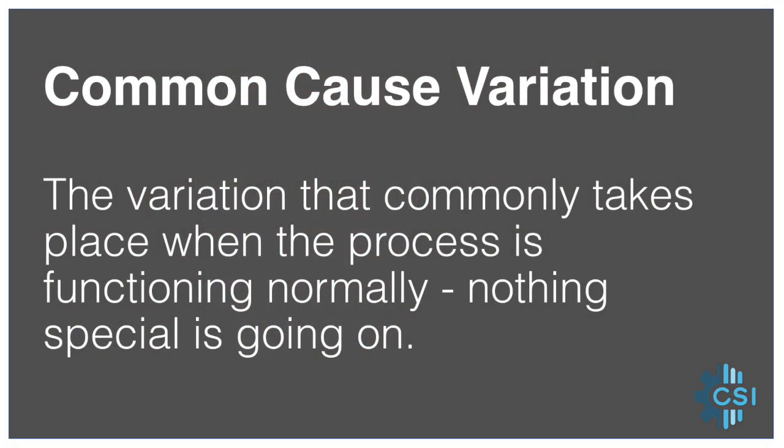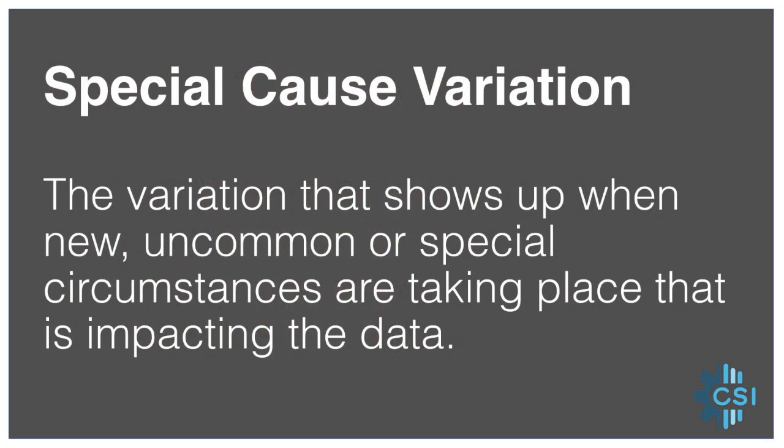With an understanding that there will always be variation, we can appreciate that we need to tell the difference between variation that commonly takes place in normal situations — referred to as common cause variation — and variation that shows up when some uncommon or special circumstances are taking place, referred to as special cause variation. For example, if a software upgrade with a bug is installed in all ECG monitors, causing delays across the organization, that would show up in the run chart as special cause variation.